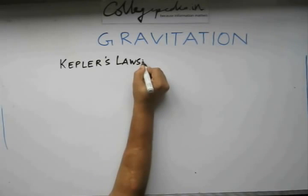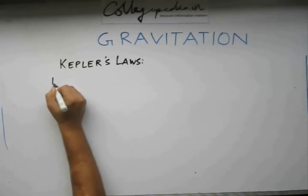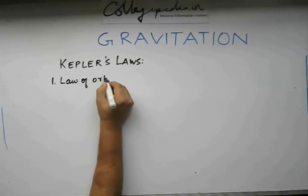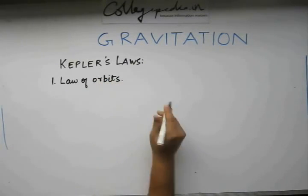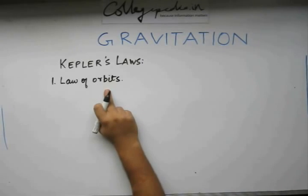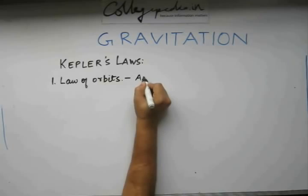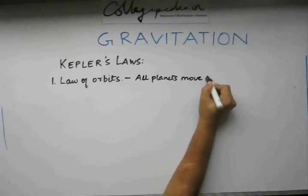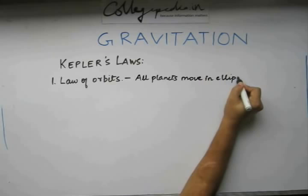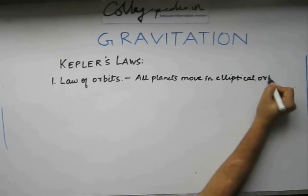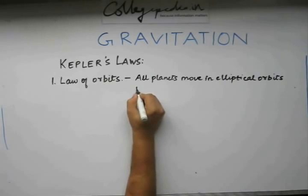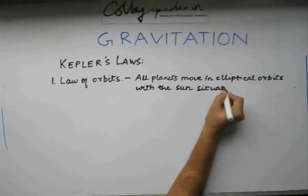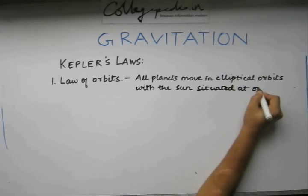So when we talk about Kepler's laws, the first law that we consider is the law of orbits. According to the law of orbits, all planets move in elliptical orbits with the sun situated at one of the principal foci.